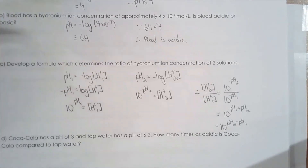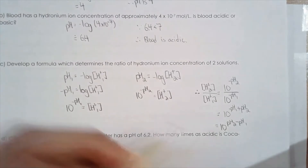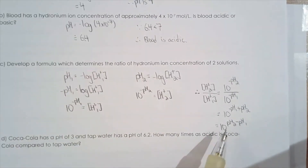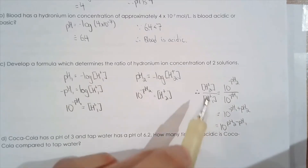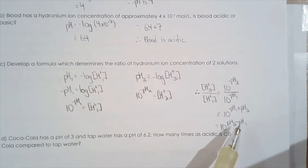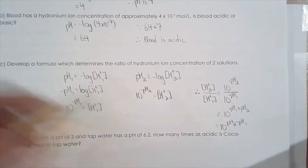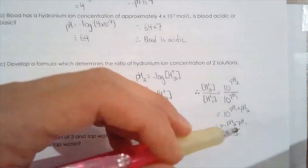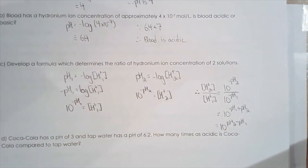Believe it or not, you actually didn't have to show all that work. The algebra is nice and not wrong, but this formula is basically telling you something quite obvious: the ratio of hydronium ion concentrations is what we said earlier — every time the pH differs by one unit, it's a tenfold change. It's 10 times as acidic or 10 times as basic. So by finding the difference between the pH values, you can automatically calculate the ratio of hydronium ion concentrations between the two solutions.